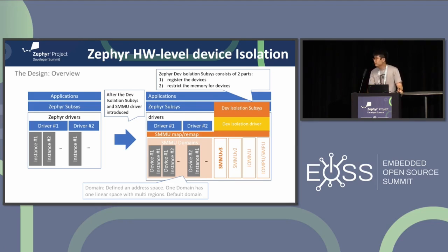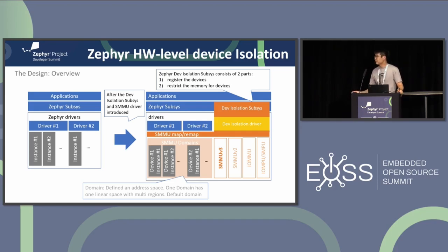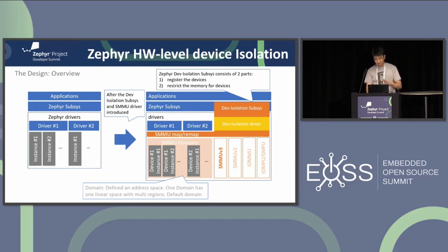We use a domain to define an address space, but for now we only have one default domain. With the device isolation subsystem, the DMA driver can restrict the access regions of DMA devices without worrying about which implementation is underlying. This framework also allows the system to support multiple isolation technologies, making it easier to extend in the future.